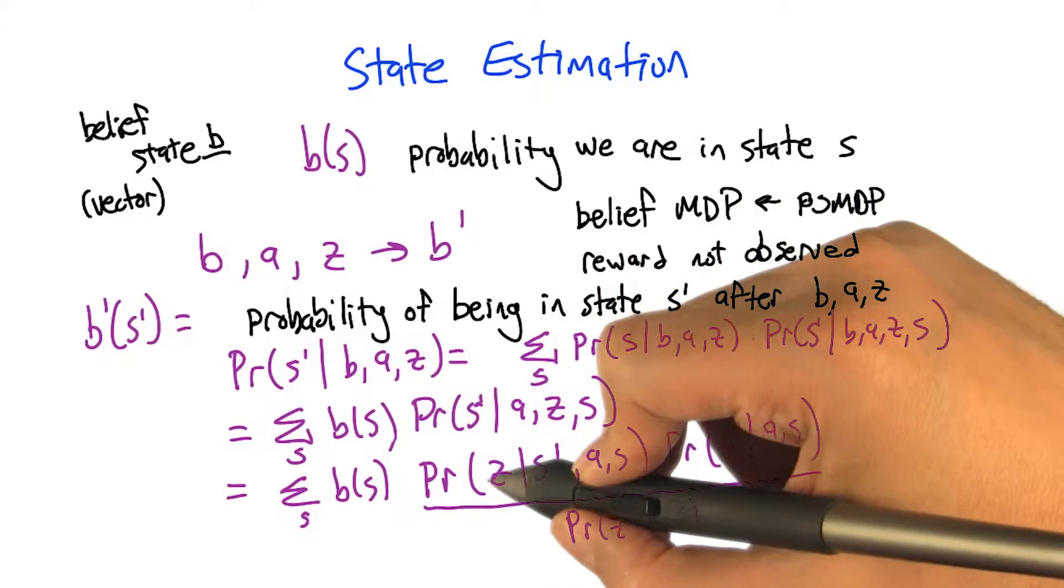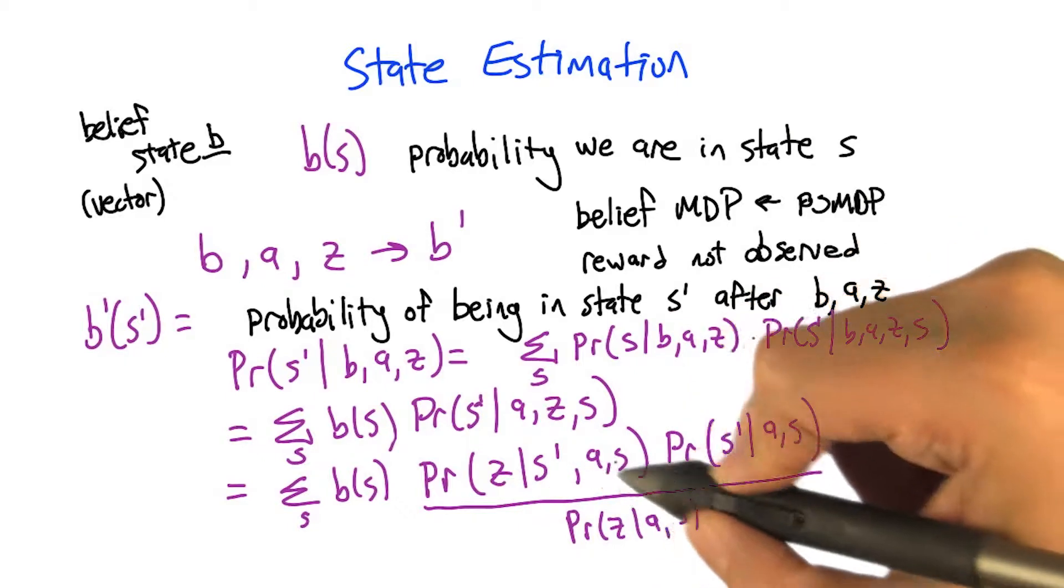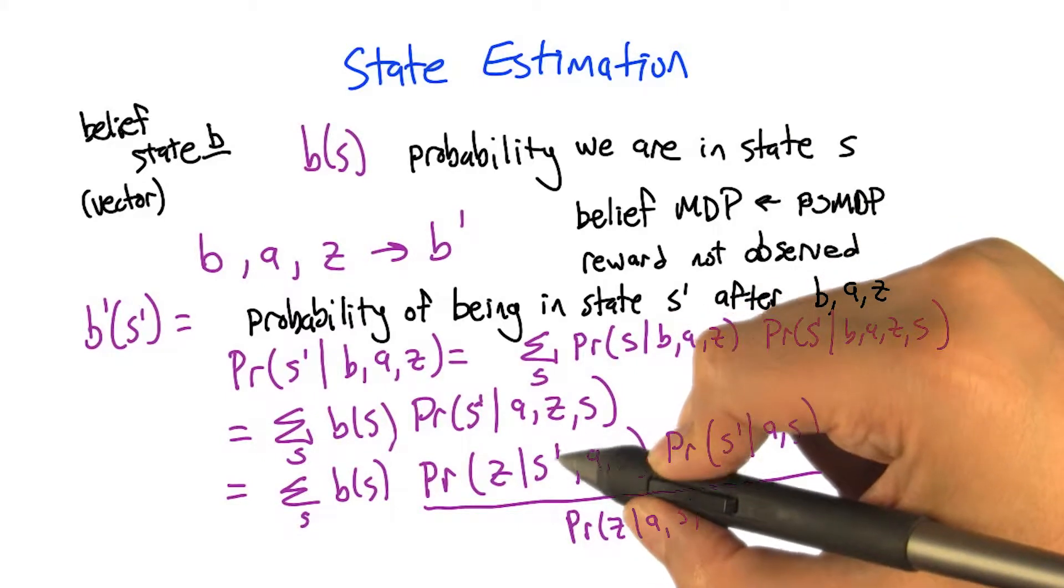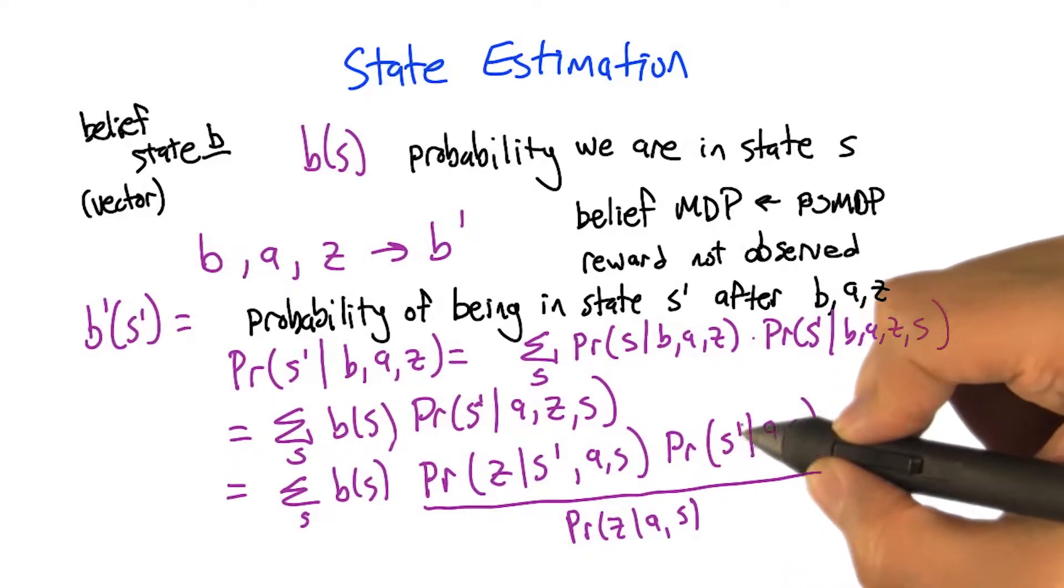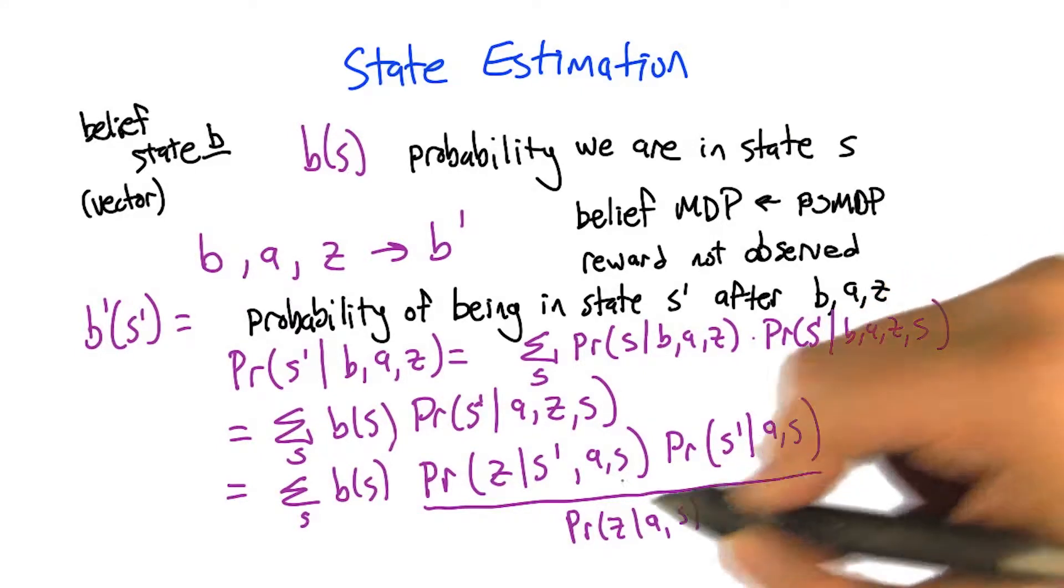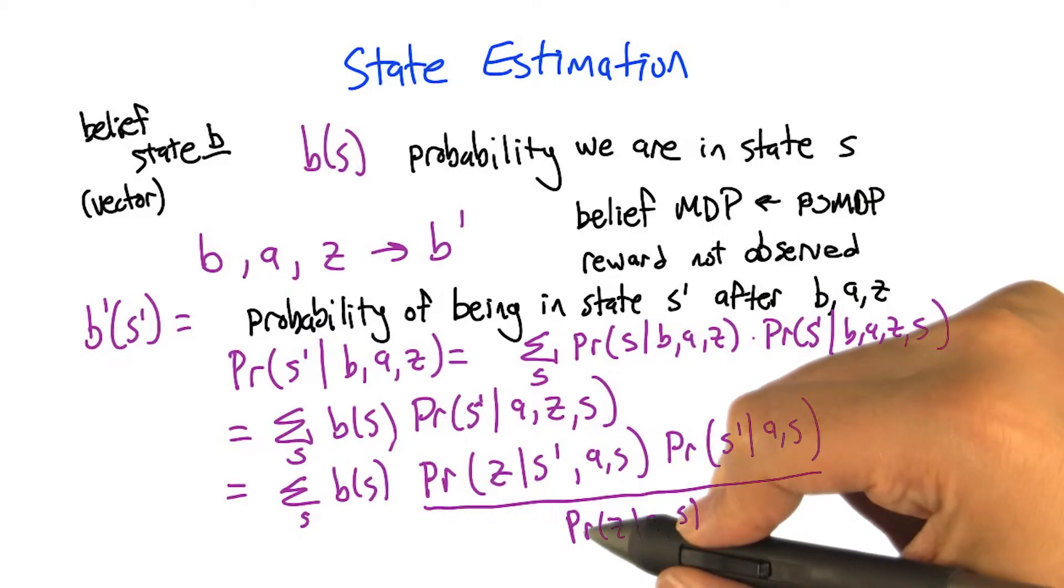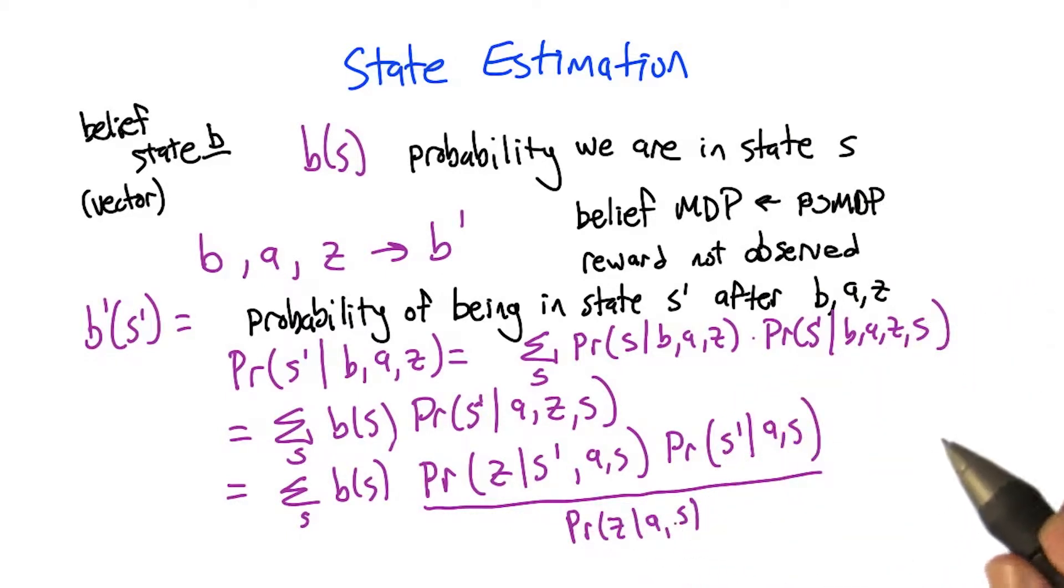So that gives us the probability of making an observation given the state that we're in, or that we arrived in S-prime, and carrying over the A and the S. And the probability that that's the state we ended in, given A and S, divided by the normalization factor, the probability of the observation given A and S.